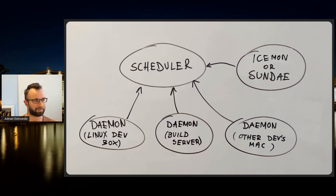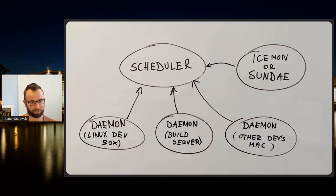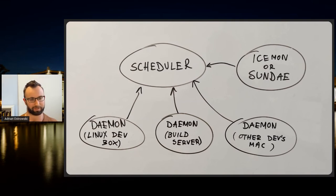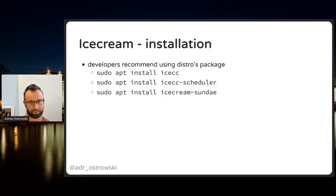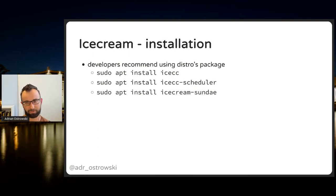IceCC has a central scheduler that Sundae and Icemon both connect to for monitoring data. Daemons on all machines connect to the one scheduler even if they have completely different configurations — one being macOS, another being Linux, for instance. For installation, use the system package manager: there's a package for the daemon, a separate one for the scheduler, and another for the monitoring tool. You can also configure two schedulers with automatic fallback.